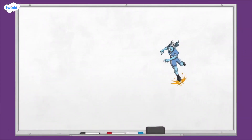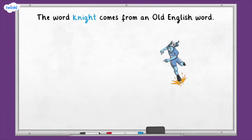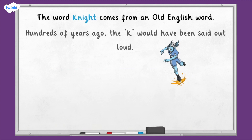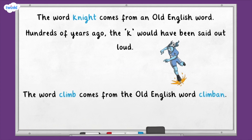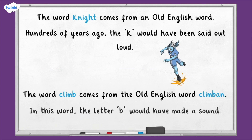For example, the word 'night' comes from Old English. Although we don't pronounce the K sound now, hundreds of years ago it would have been pronounced. The word 'climb' comes from an Old English word spelt C-L-I-M-B-A-N, in which the letter B would have made a sound.